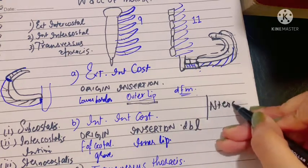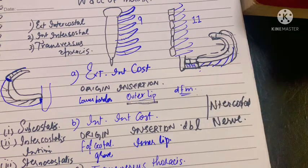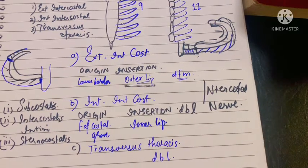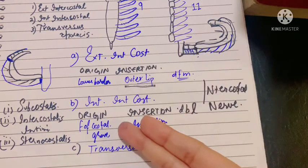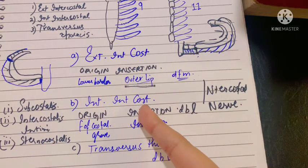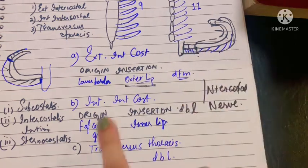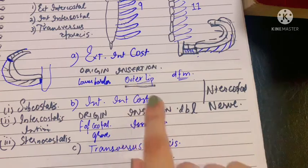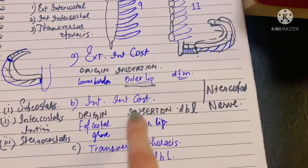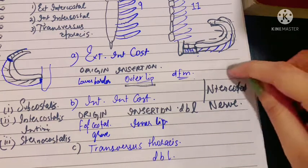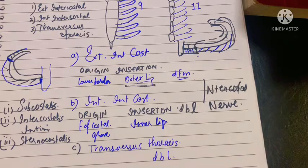All of these muscles have a single nerve supply: the intercostal nerve. Their actions include: first, preventing the in-drawing of ribs during inspiration and out-drawing during expiration. Second, elevation of the ribs, which is done by the external intercostal muscle and the interchondral portion of the internal intercostal muscle during inspiration — the interchondral portion being the portion that lies between the costal cartilages. The transversus thoracis and the rest of the internal intercostal muscle, except its interchondral portion, are responsible for bringing the ribs back to their original position during expiration. In the next lecture, I will talk more about the intercostal nerve, its course, origin, and termination.